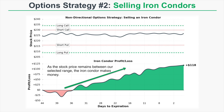This strategy will be maximally profitable at expiration if the stock price is between our short put strike of 216 and our short call strike of 230. On the bottom part of the graph we can see the profit and loss of this particular iron condor position over time.